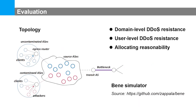We leverage a Benign Simulator to evaluate our mechanism. We present the network topology: there are uncontaminated ASes and contaminated ASes. The uncontaminated ASes contain only legitimate clients, while the contaminated ASes contain both clients and attackers. All end hosts compete for the bandwidth of the bottleneck link. We evaluate our mechanism in the following three aspects.